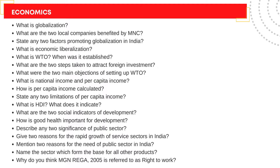How is per capita income calculated? State any two limitations of per capita income. What is HDI and what does it indicate? What are the two social indicators of development? How is good health important for development? Describe any two significance of the public sector.